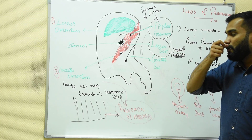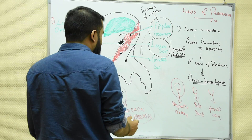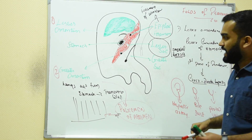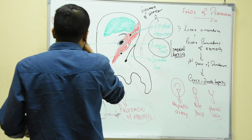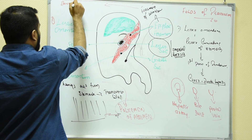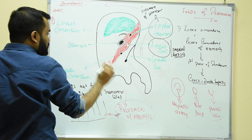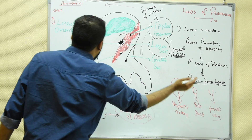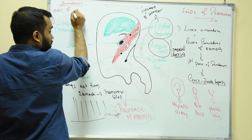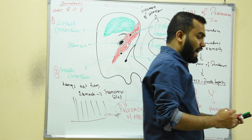The connection between the lesser sac and greater sac is called the epiploic foramen, also known as the foramen of Winslow. They used to ask the boundaries of this foramen in MCQs. The anterior boundary is formed by the hepatic artery, bile duct, and portal vein — which are the same as the contents of the lesser omentum.